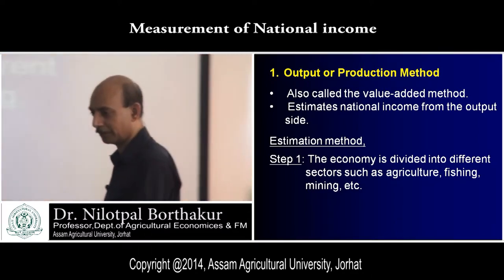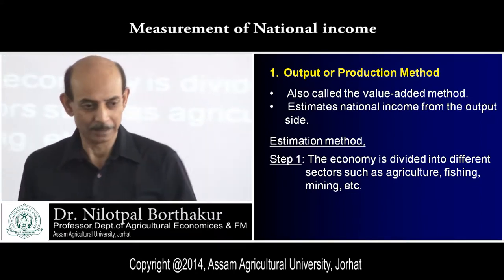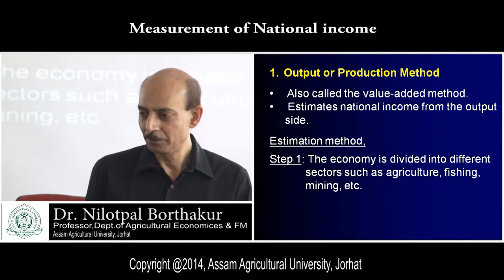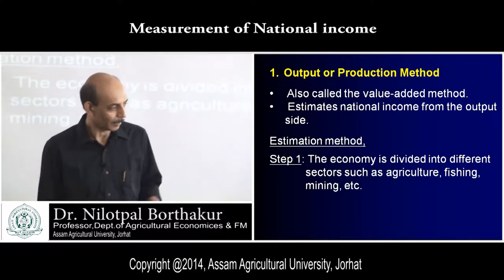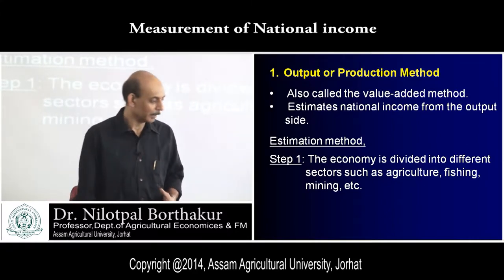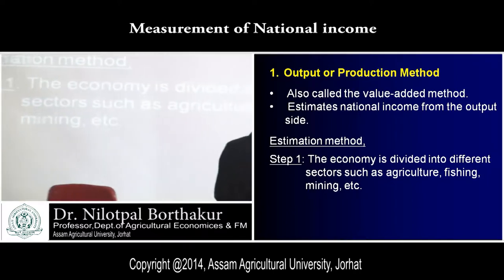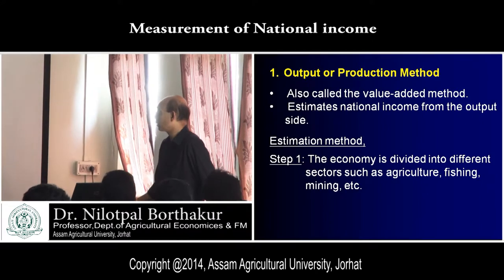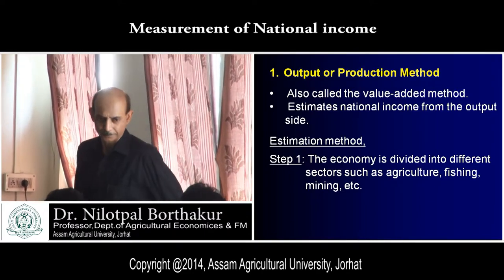When cotton is produced, it is used as raw material for yarn — value is added. Yarn is again processed for fabric — again value addition. Fabric is used for manufacturing ready-made garments — again value addition. So this production ultimately leads to addition of value to different commodities, which is why this method is also called the value added method — an estimation of national income from the output side.